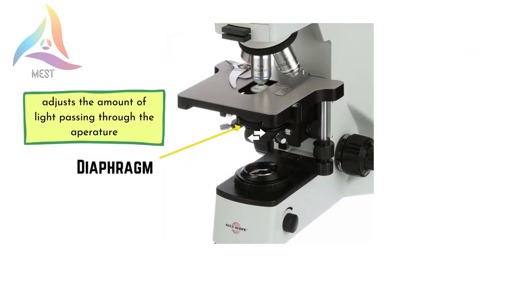The diaphragm, or iris, is a rotating disc located under the stage and adjusts the amount of light illuminating the specimen on the slide. Therefore, we can see the image with good contrast after passing enough light to the specimen on the slide.